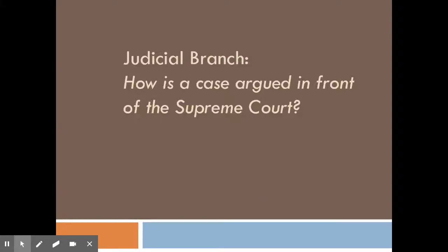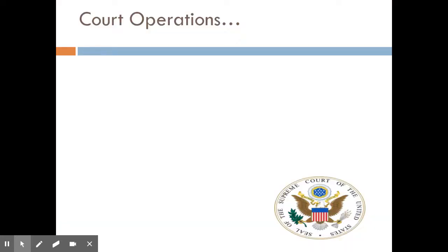We've previously talked about how a case gets to the Supreme Court. This video is going to focus on — you're the rare case, you reach the Supreme Court, the Supreme Court decides to hear your case — and how the argument process goes down. What people find is that it's very different from the types of legal cases they're used to seeing on TV, like in movies or TV shows. That's not really how it goes down in the Supreme Court.